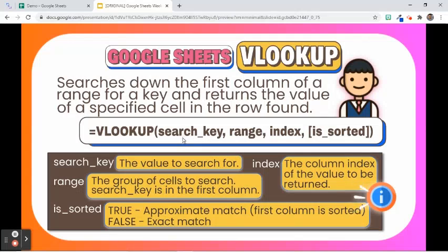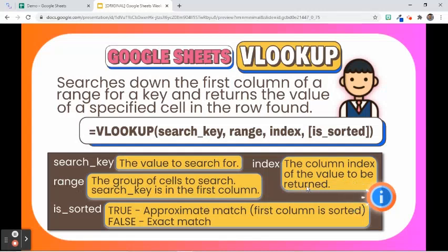The first argument is search key, which is the value to search for. The second argument is the range, which is the dataset to consider for the search. The first column in the range is searched for the key specified in search key. The third argument is INDEX, which is the column index of the value to be returned. The first column in the range is INDEX 1, the second column is INDEX 2, and so on.